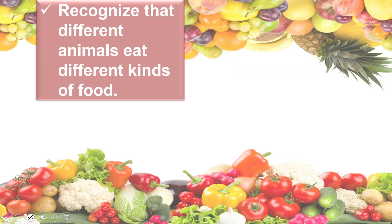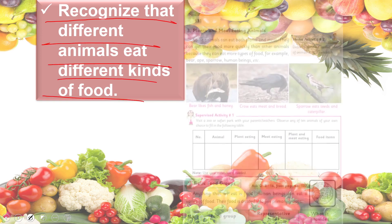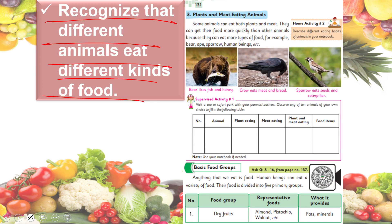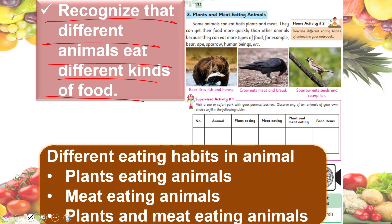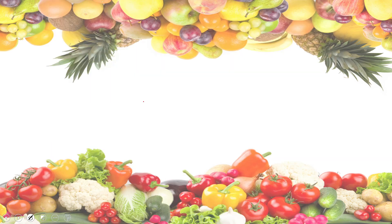In the next lecture, students were able to recognize that different animals eat different kinds of food. Animals have different eating habits: some eat plants, some eat other animals or meat, and some eat both plants and animals. Due to these eating habits, animals are classified as plant-eating animals, meat-eating animals, and those that eat both plants and animals.